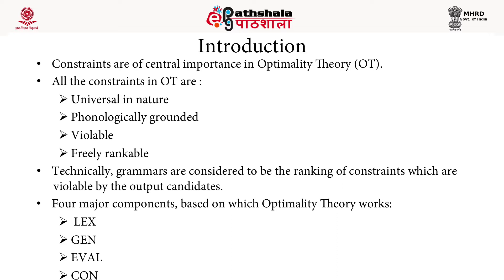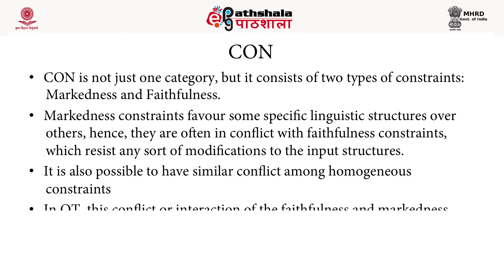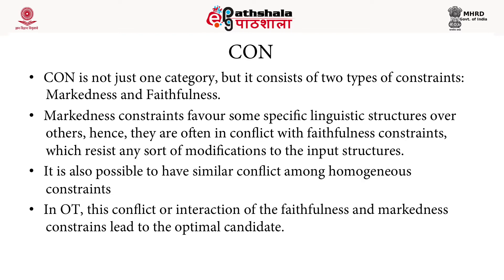While the constraints are universal, their rankings deviate in different languages. Hence grammars do not differ in terms of the types of constraints they present. There are four major components based on which OT works: LEX, GEN, EVAL, and CON. Among them, CON represents the constraints. In OT, constraints demand structural requirements that may either be satisfied or violated by any output form generated by GEN. CON consists of two types of constraints: markedness and faithfulness constraints.